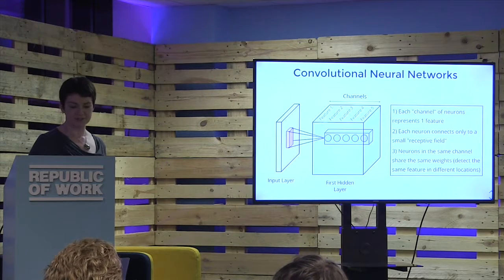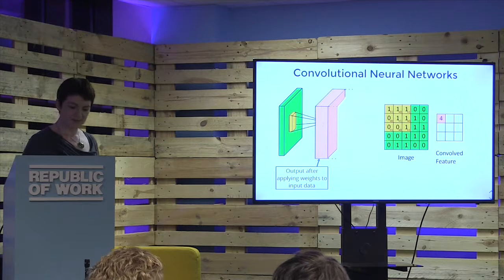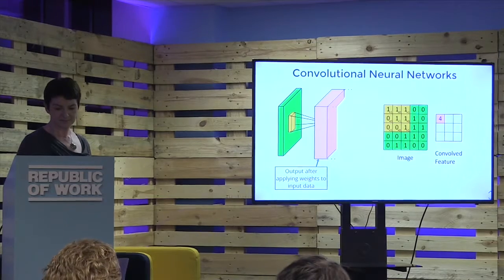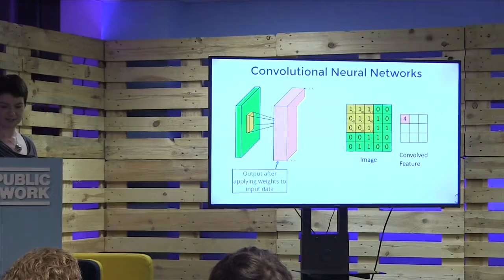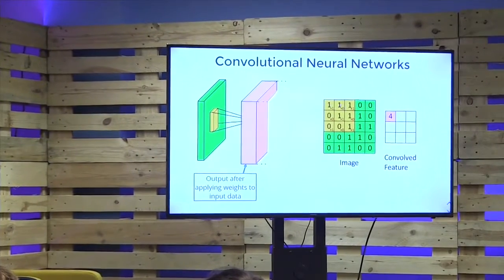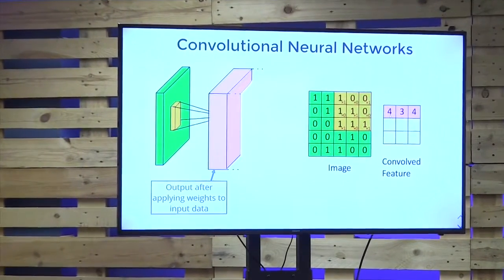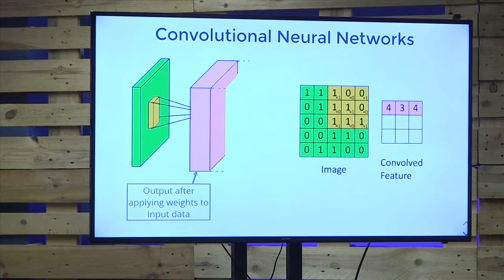You can consider all the neurons in channel one as one neuron that's moving around the image — I have an animation to show that. Bear in mind that these cuboid blocks represent the output after applying weights to the data. Here you see a three by three patch — that's our receptive field. The little red numbers are the weights and the other numbers are the input data. We're doing matrix convolution: multiplying element-wise and summing, so on this yellow patch you get four out. The weights move across the image and produce output, which is smaller than the input image — we'll come to solutions for that in a moment.